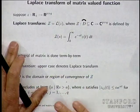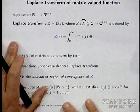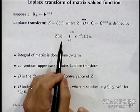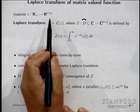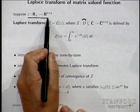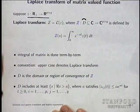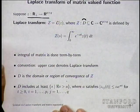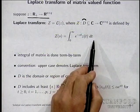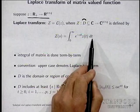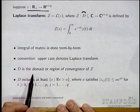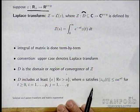The integral of a matrix is extended or overloaded to be entry by entry. The convention is that an uppercase letter denotes the Laplace transform of the signal — some people call that a time-domain signal. T does not have to represent time; it makes no difference what this means. D is called the domain or region of convergence of Z.